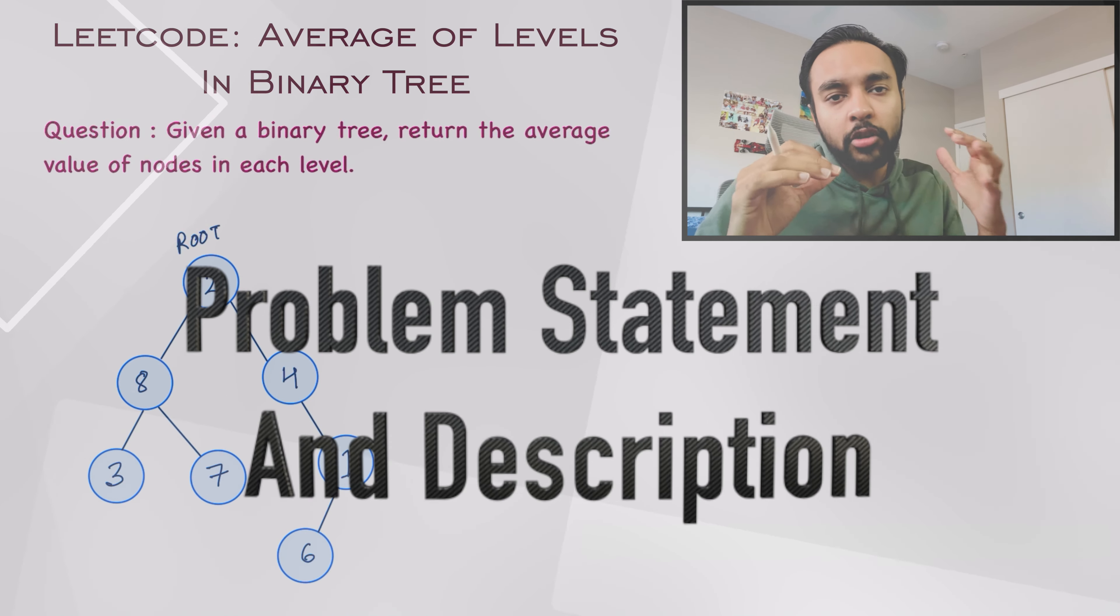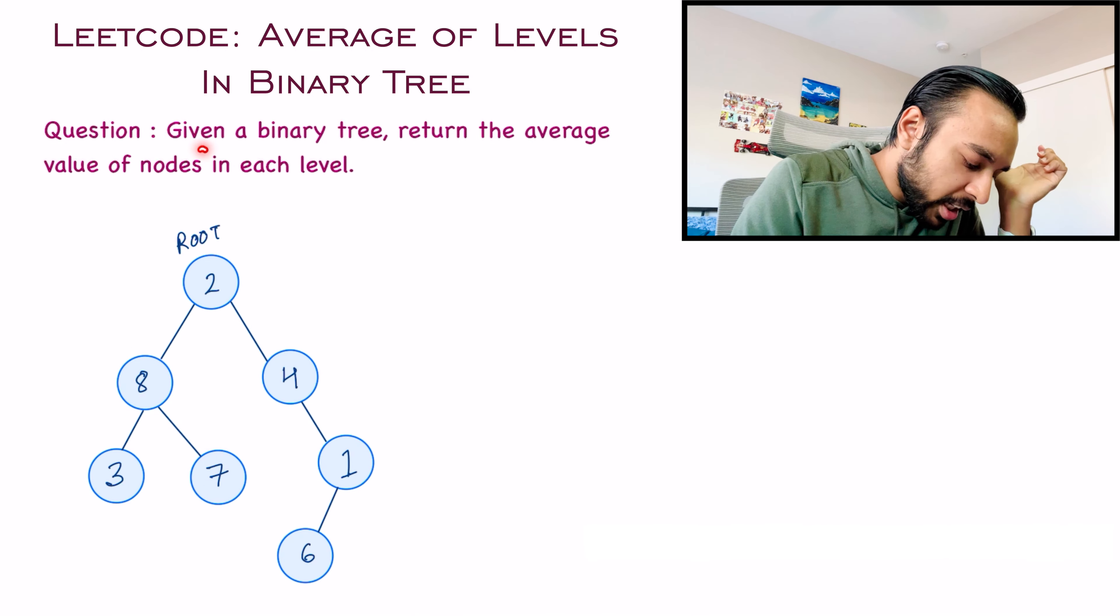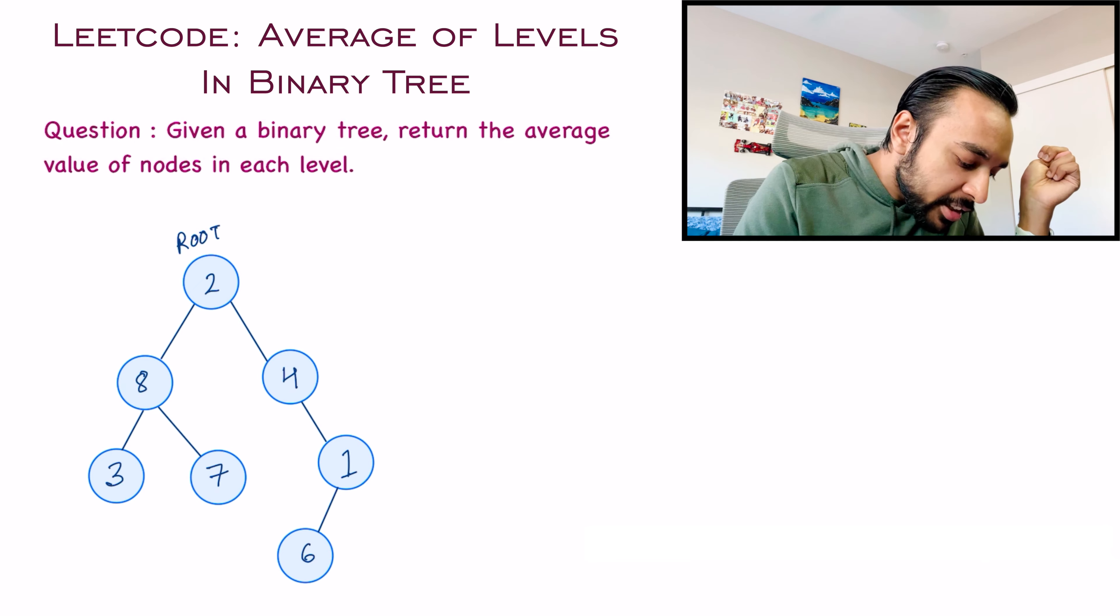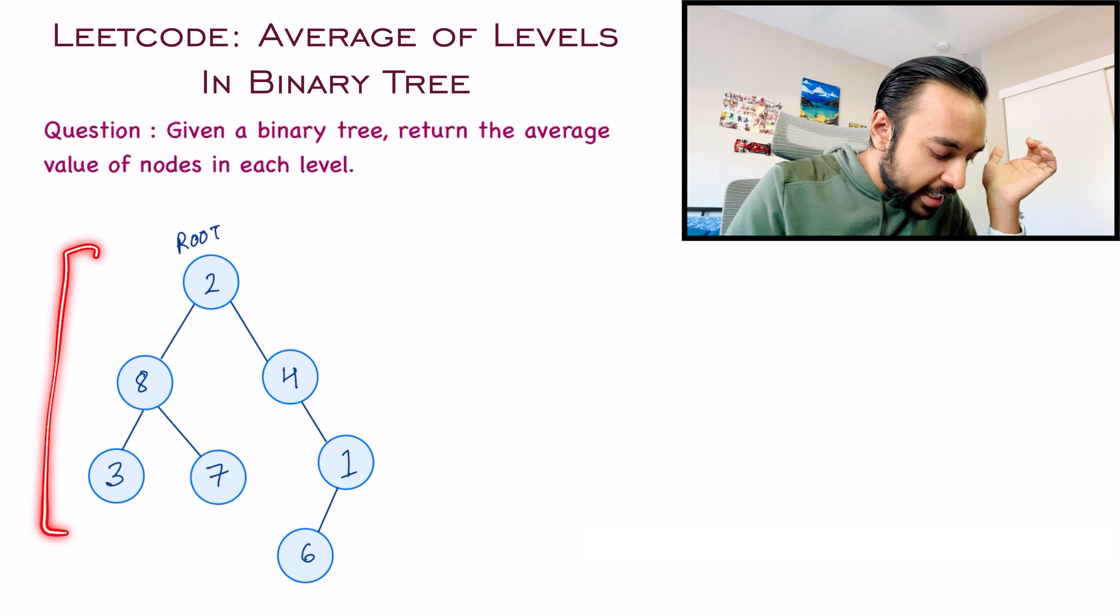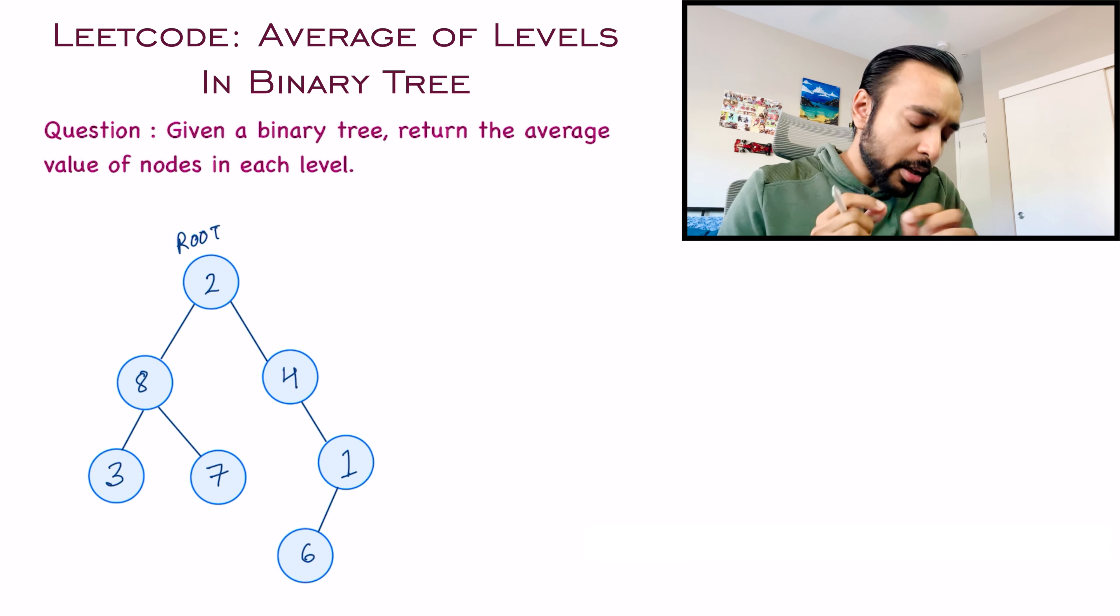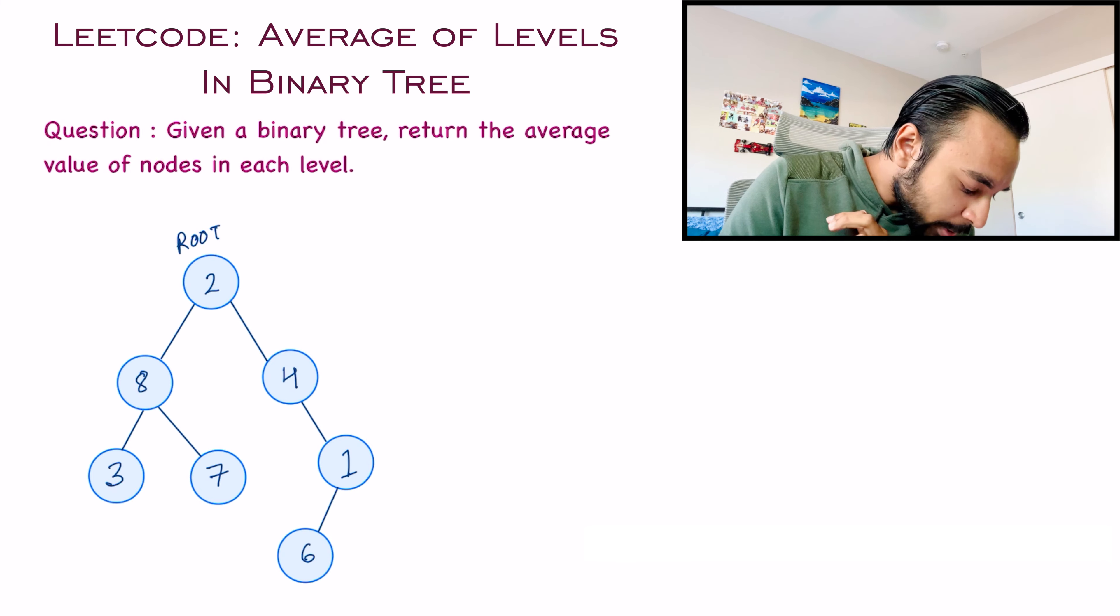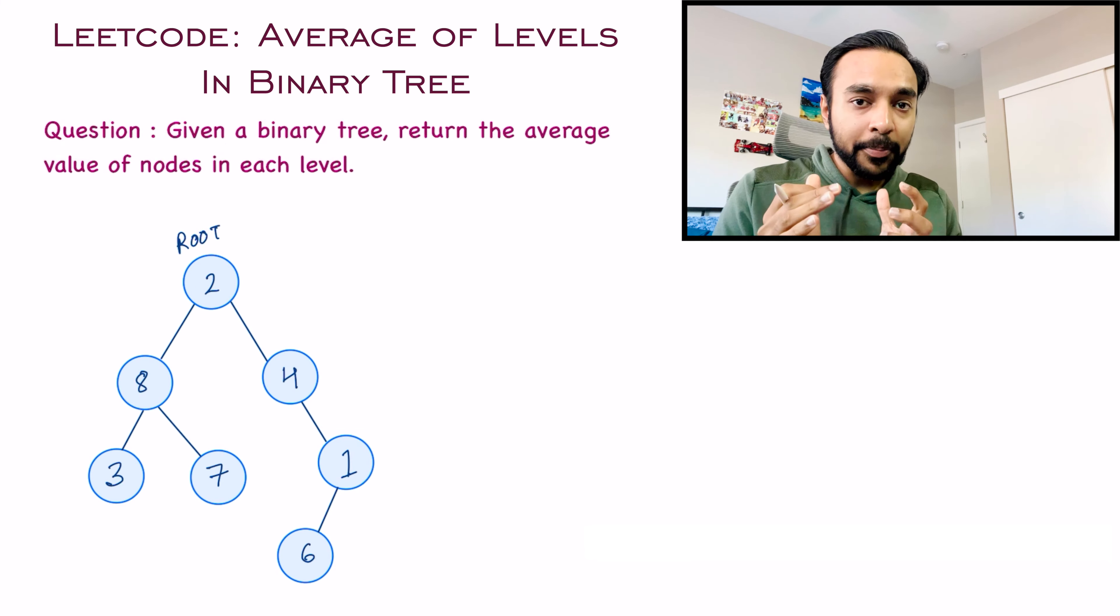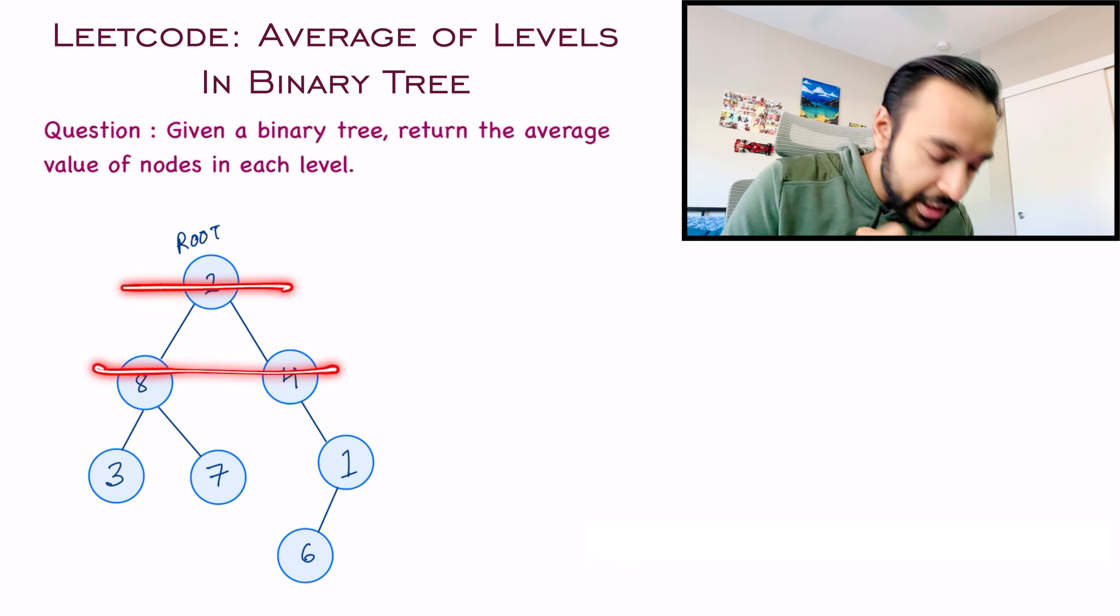So first of all, let us quickly try to make sure that we are understanding the problem statement correctly. In this problem, you are given a binary tree. That means each node has two child nodes. And you have to return the average value of nodes in each level. So let's say I have this sample binary tree in front of me. The only thing you need to know is what is actually a level. For example, in this binary tree, this is level one, then this is level two, this is level three, and then this is level four.